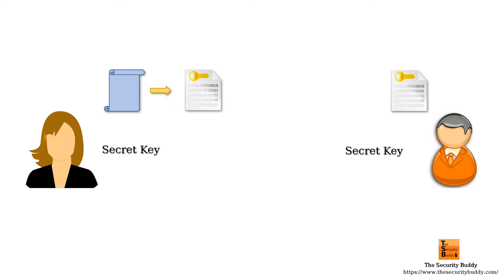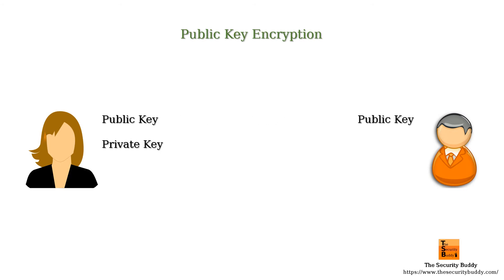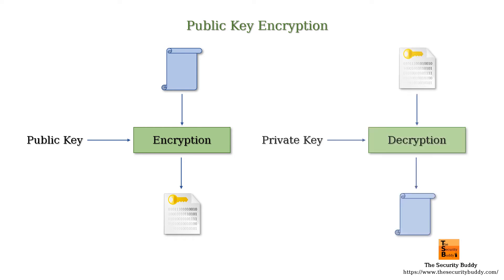In public key encryption or asymmetric encryption, a user generates a key pair consisting of a private key and a public key. The private key is kept secret with the user and the public key can be shared with others. If a message is encrypted with the public key, then it can only be decrypted with the corresponding private key, and vice versa.